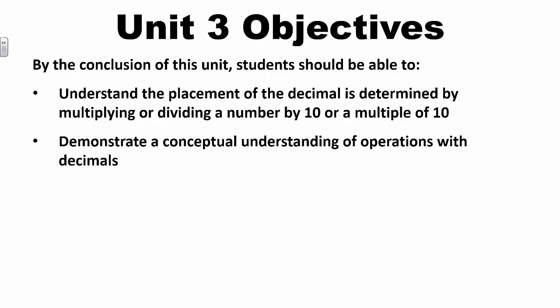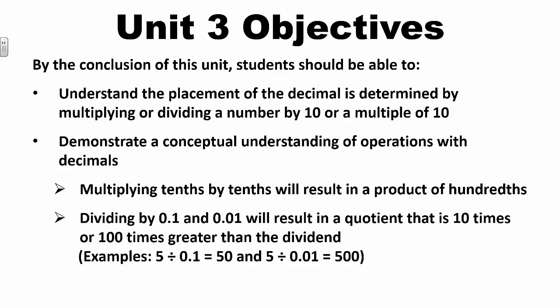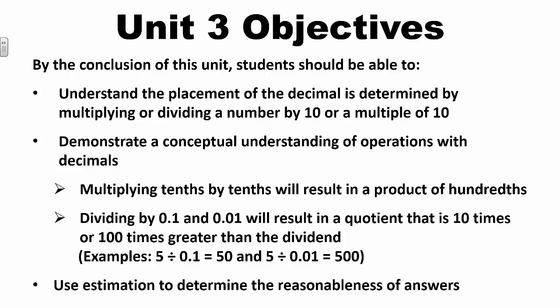Students should demonstrate a conceptual understanding of operations with decimals as opposed to relying on procedural knowledge — such as understanding that multiplying tenths by tenths will result in hundredths, or that dividing by one-tenth or one-hundredth will result in a quotient that is 10 times or 100 times greater than the dividend. For example, 5 divided by one-tenth equals 50 and 5 divided by one-hundredth equals 500. Students should also use estimation to determine the reasonableness of answers.